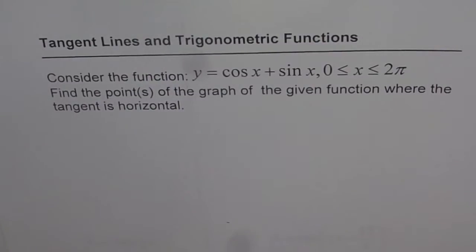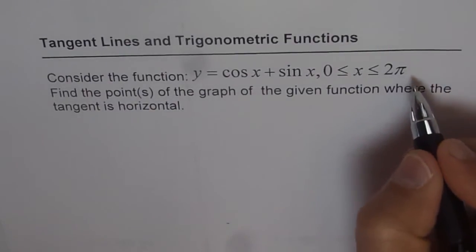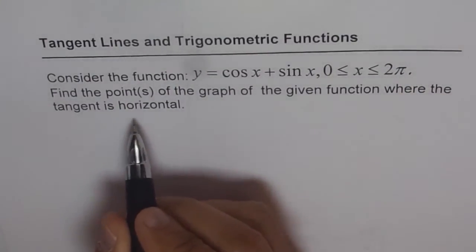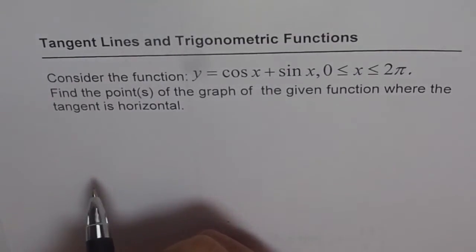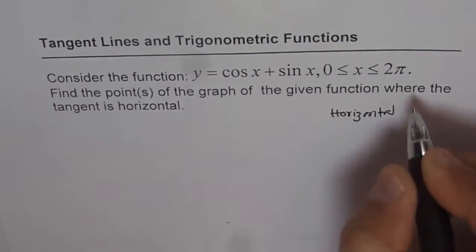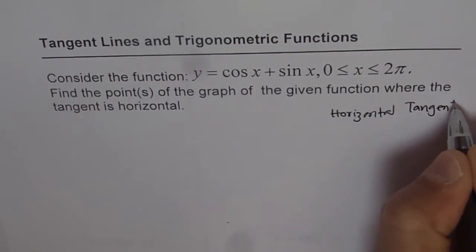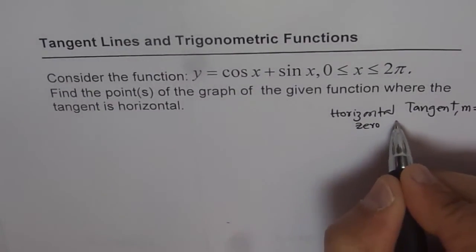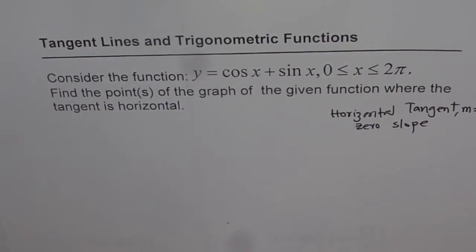Tangent lines and trigonometric functions. Consider the function y equals cos x plus sin x, where x is greater than or equal to 0 and less than or equal to 2π. Find the points of the graph of the given function where the tangent is horizontal. When we say tangent is horizontal, that means slope is 0. Horizontal tangent means zero slope. So we are saying m equals 0. Keep that in mind and then solve the question.